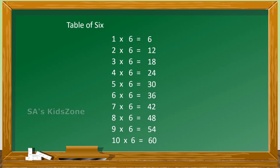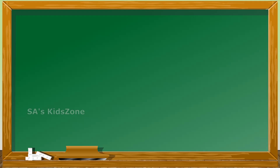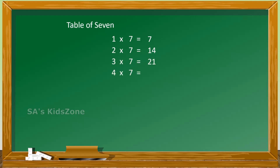The next is table of 7: 1 seven is 7, 2 sevens are 14, 3 sevens are 21, 4 sevens are 28, 5 sevens are 35, 6 sevens are 42.